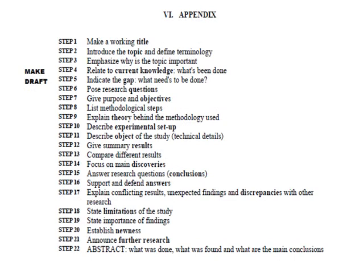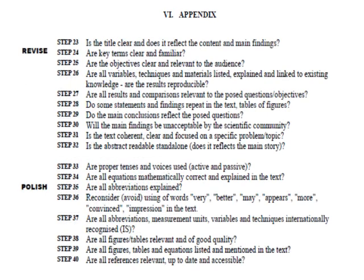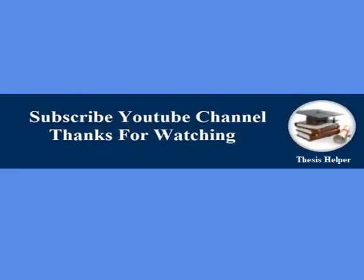Number six is the appendix. There are 40 steps to write a research article. The first 20 steps are shown on this slide, covering the initial drafting process. The remaining steps cover how to revise and polish your research article, from step 23 to step 40. Kindly subscribe to the YouTube channel 'Thesis Helper.' Thanks for watching.